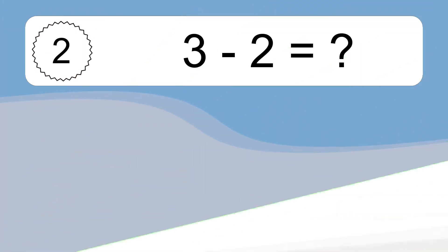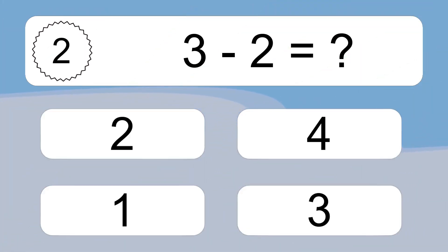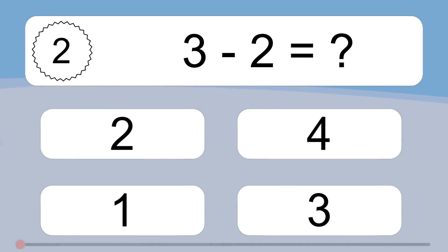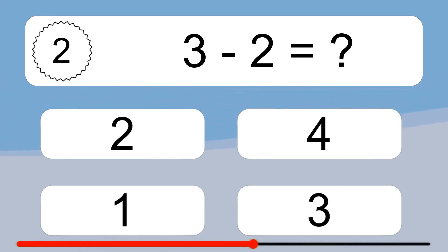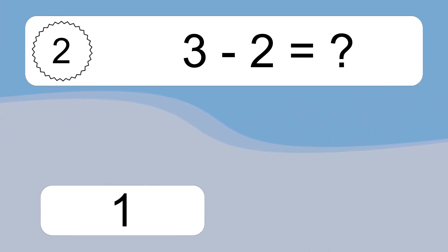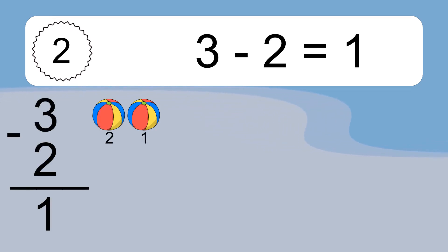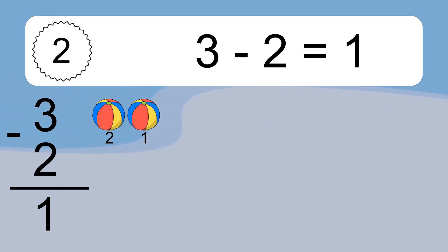3 minus 2 equals what? 3 minus 2 equals 1. Let's count it: 2, 1.